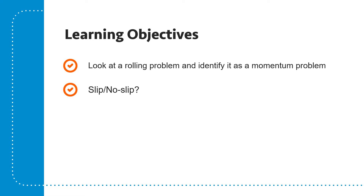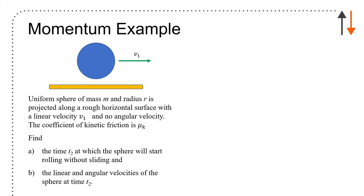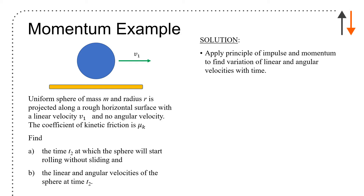The second issue is slip, no slip. I have a uniform sphere of mass m and radius r that is projected along a rough horizontal surface with a linear velocity v sub 1 and no angular velocity. The coefficient of kinetic friction is given as mu sub k. Find the time t2 at which the sphere will start to roll without slipping, and the linear and angular velocity of the sphere at time t2.